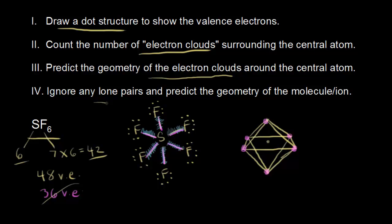Step 4: ignore any lone pairs on your central atom and predict the geometry of the molecule. Since we have no lone pairs on our central sulfur, the geometry of the molecule is the same as the geometry of the electron clouds. Therefore, sulfur hexafluoride is an octahedral molecule.